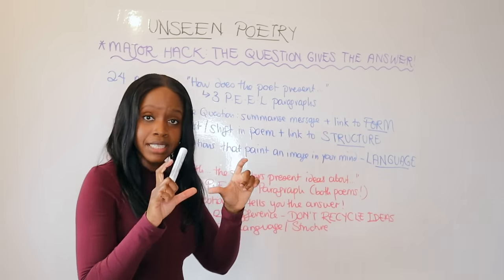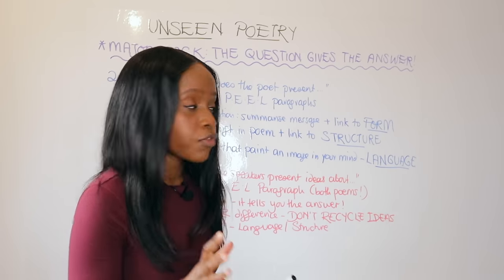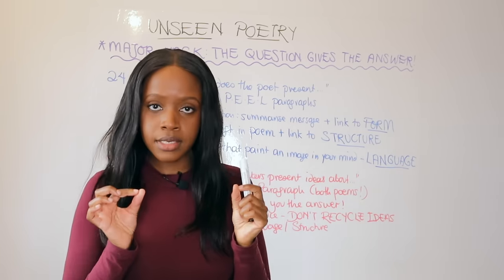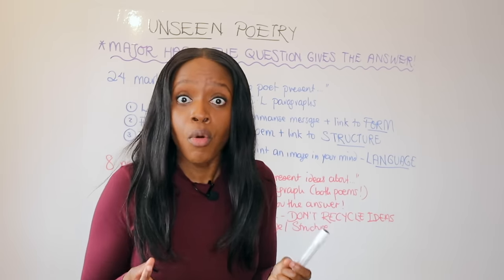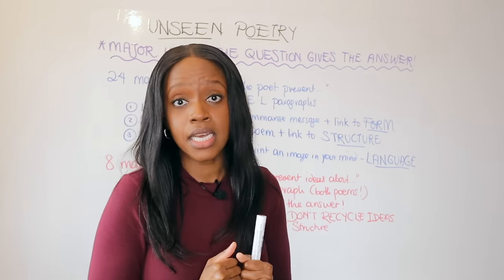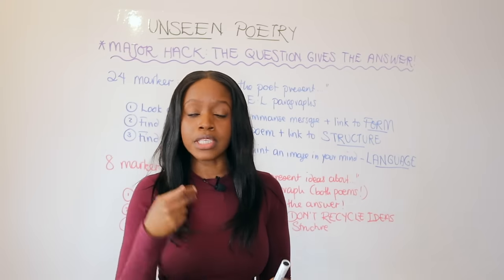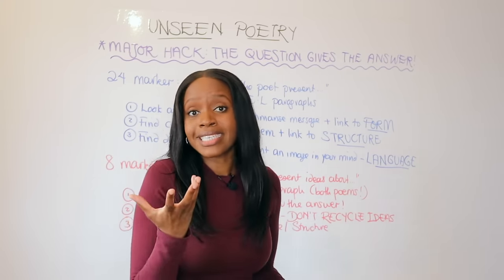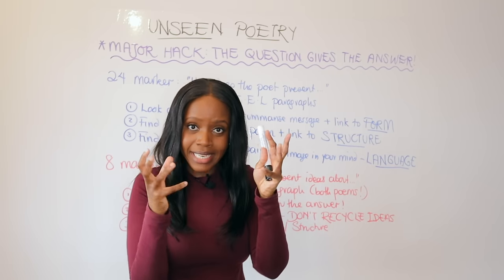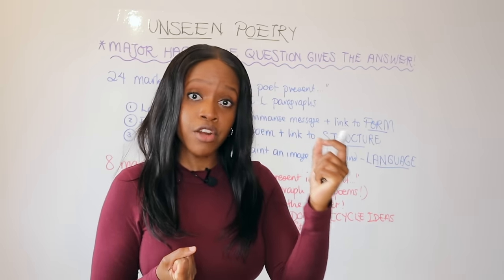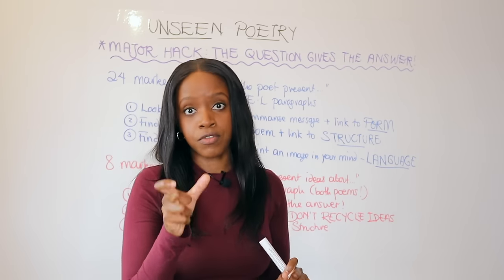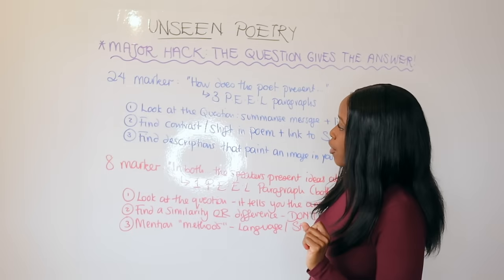Step one: look at the question — it gives you the main message. In your first PEEL paragraph, summarize what you think the main message is and link it to form. Form means how the poem looks visually: is it one single stanza, written in couplets, tercets, or as a sonnet? Form is basically how the poem is laid out. Always link back to the question.